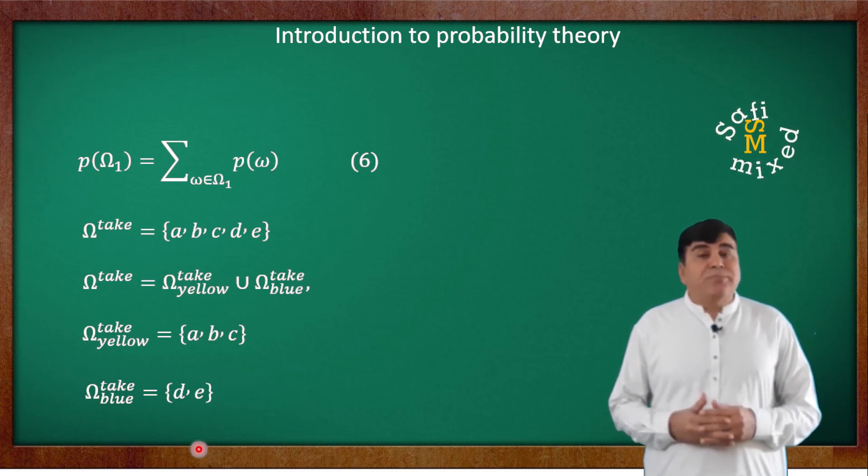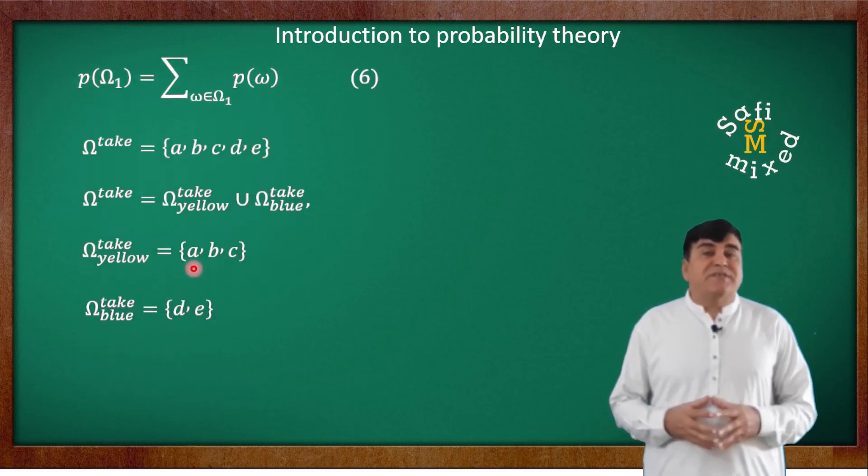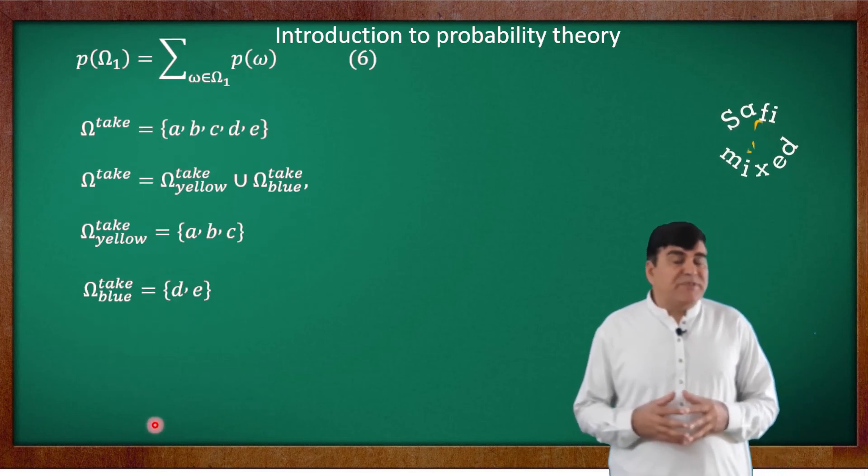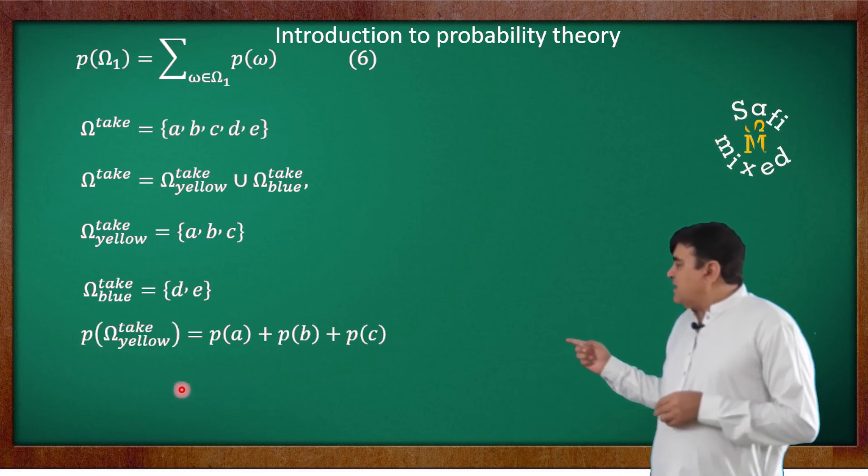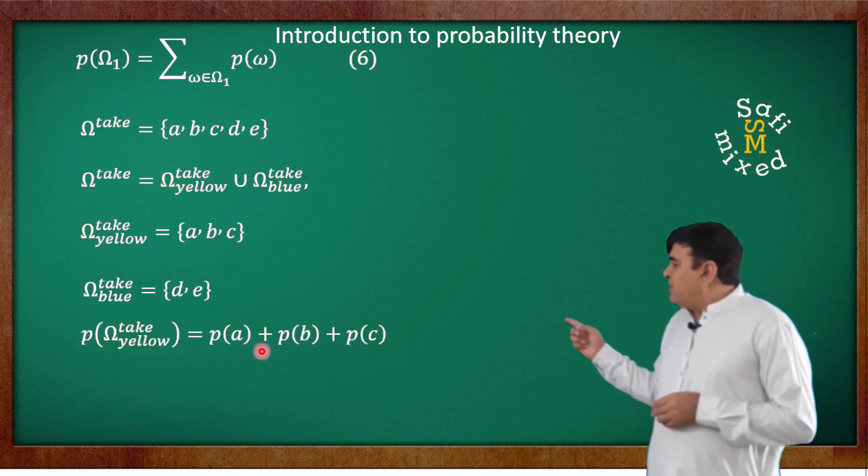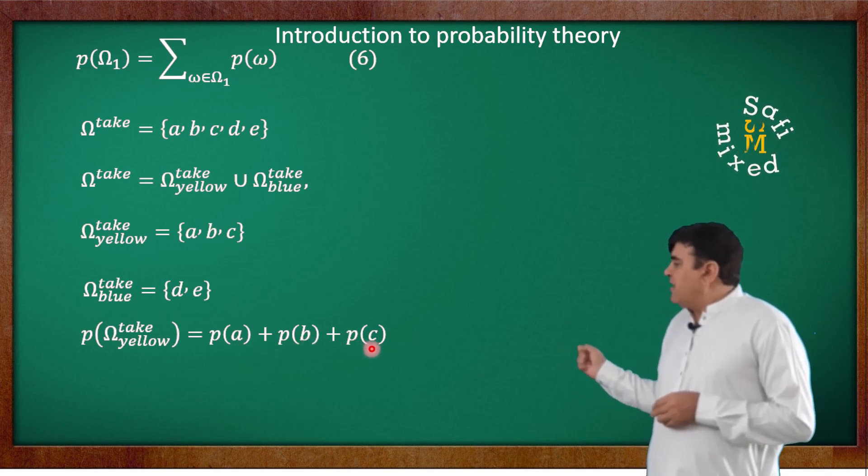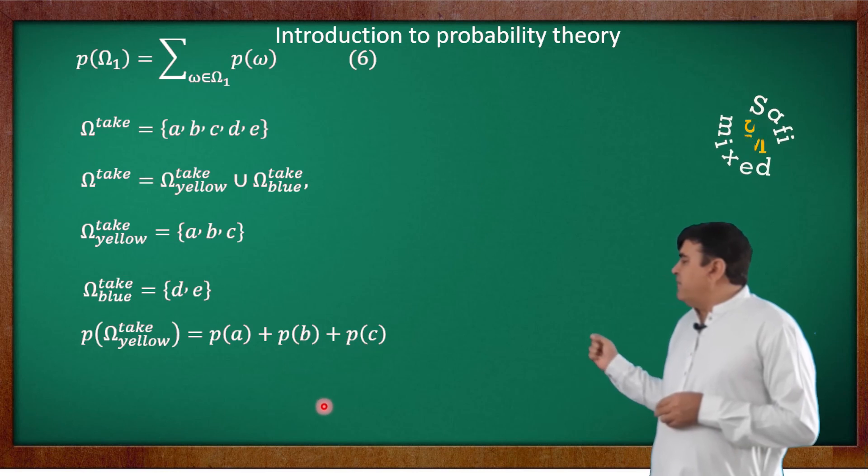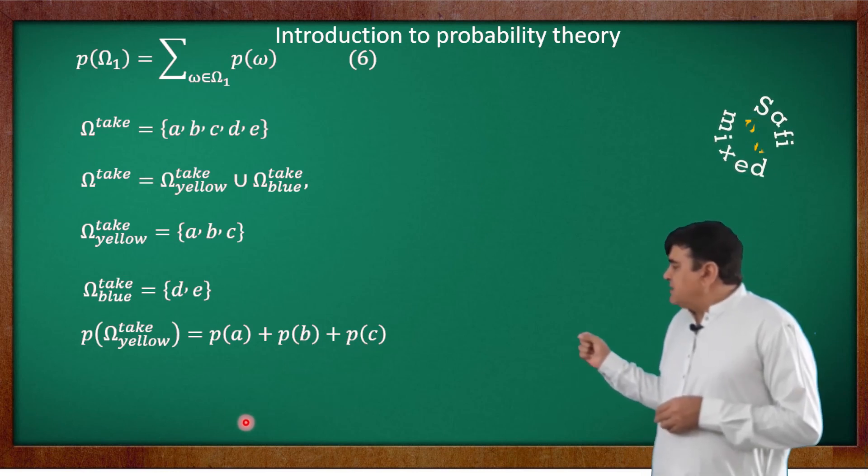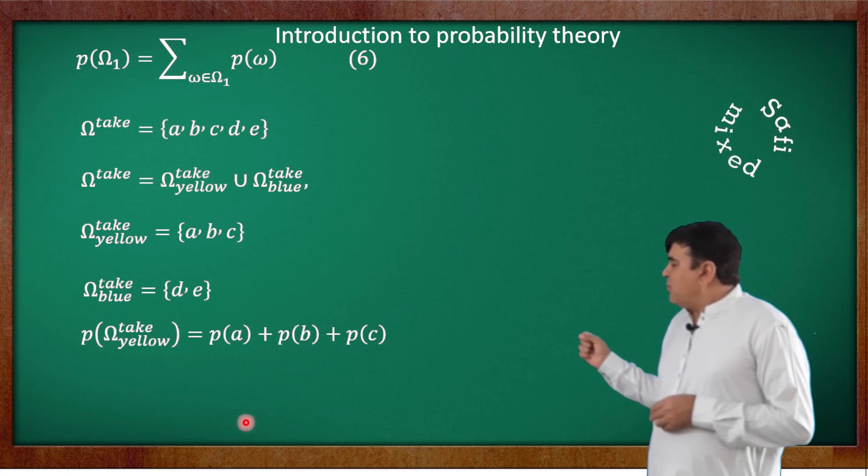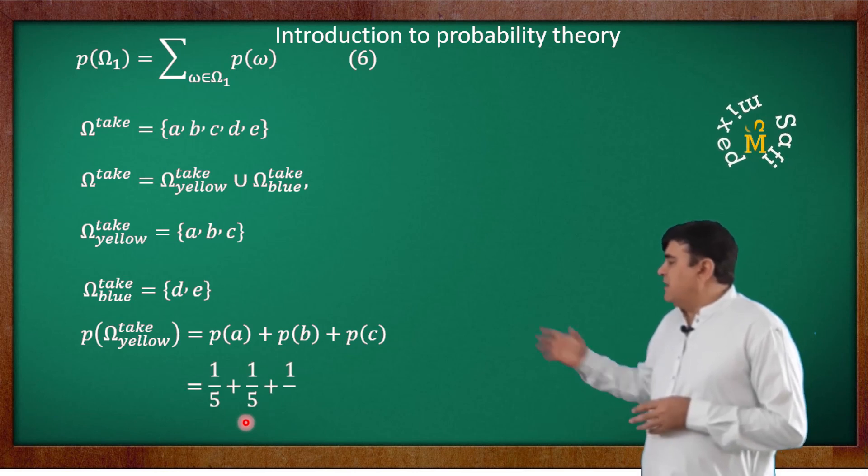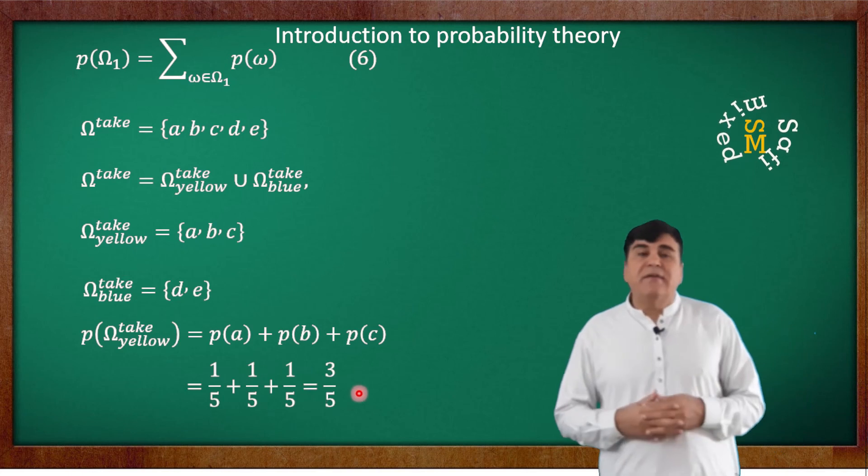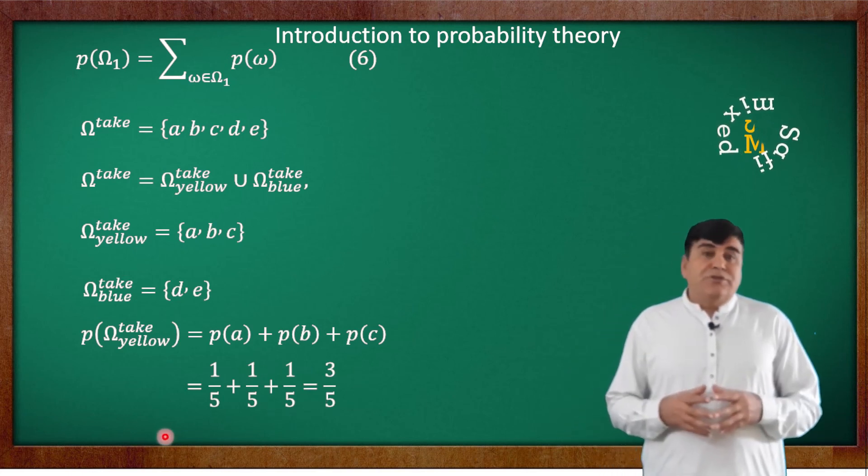For example, the total probability of the subspace of yellow pick can be expressed as P(Ω_yellow take) = P(A) + P(B) + P(C). Since the pick of every ball is equally probable, therefore I can use the probability of each ball equal to 1/5, and summing them three times leads to 3/5.